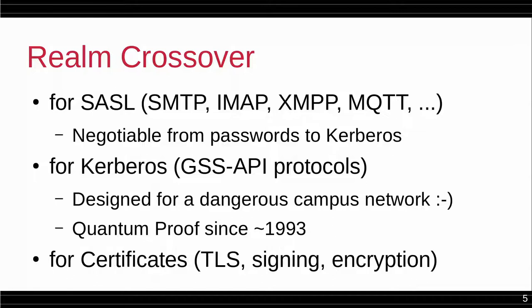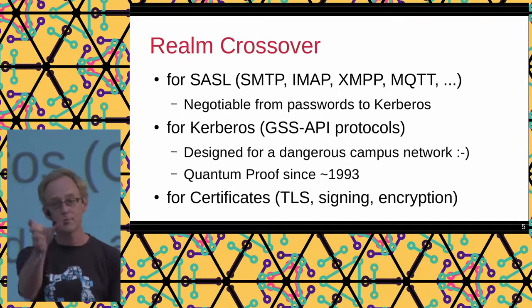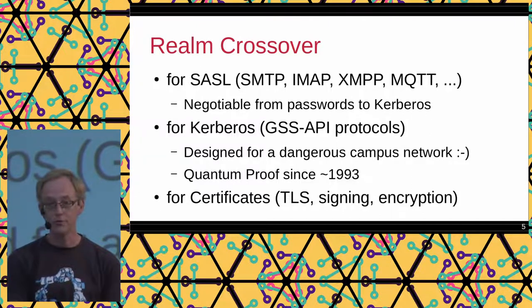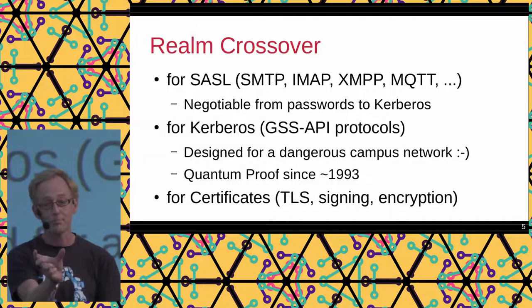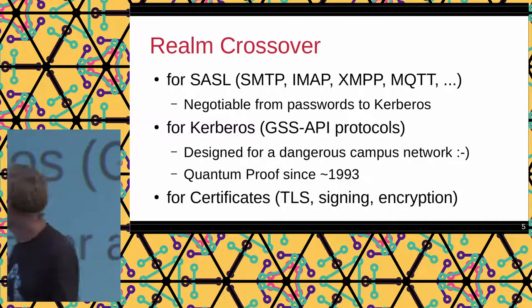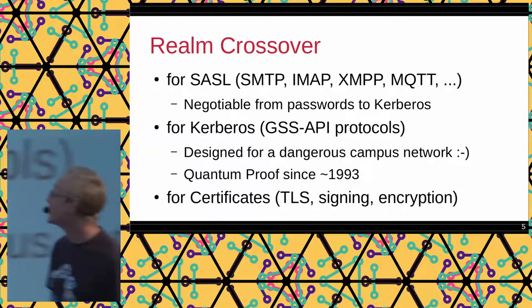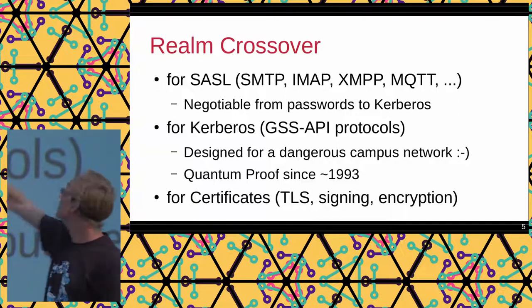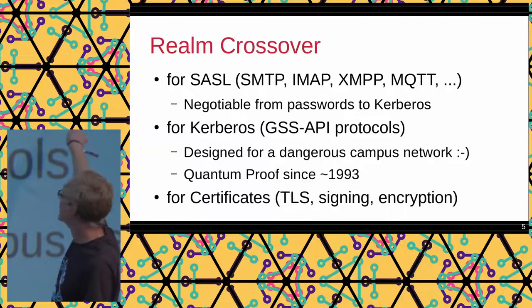SASL — in case you don't know it — means that the server sends you a list of mechanisms you might use: plain text, GSS-API, or Digest-MD5. The client chooses which mechanism to use, and then they start passing tokens back and forth, interpreted through that mechanism, until the server says 'you're welcome' or 'you're not.' This is very generic and allows you to negotiate — from a simple password to something as fancy as Kerberos.